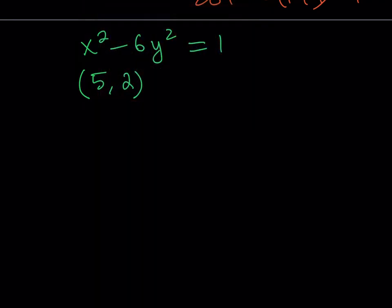There are many examples, so I'll include links in the description — you can look up the Wikipedia article, which has a lot of good information and links at the bottom. Another example: x squared minus 5y squared equals 1. The solution here is (9, 4), because 81 minus 80 equals 1. So (9, 4) is a solution.